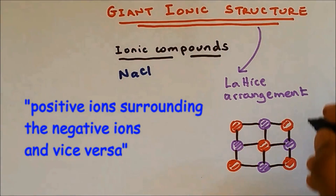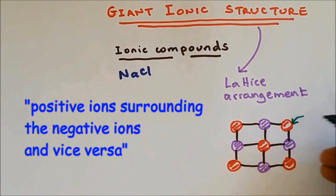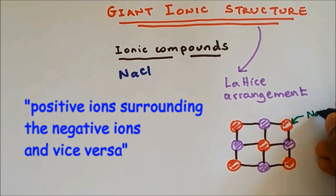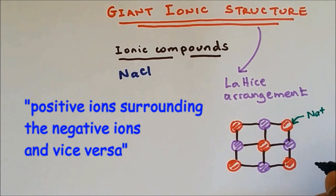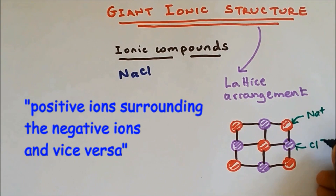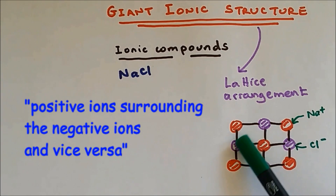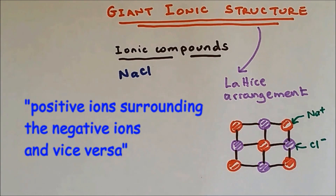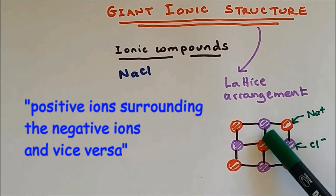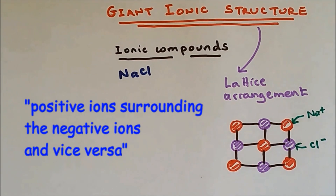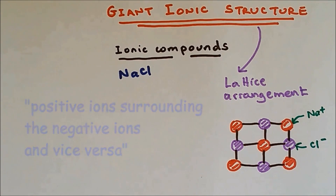We're going to assume the red one is the sodium plus, which is the positive ion, and the purple one is the chlorine, which is the negative ion. You can see that the positive sodium is surrounded by the negative ion chlorine, and the chlorine, which is the negative ion, is surrounded by the positive ion. Such arrangement is called lattice arrangement.